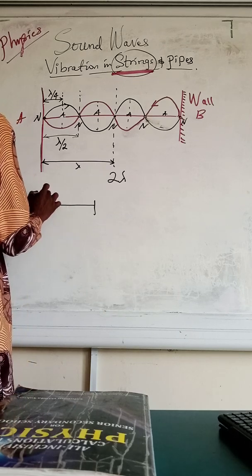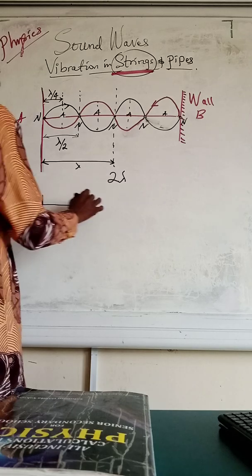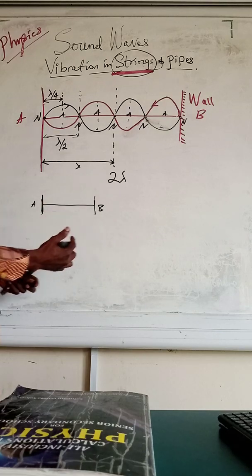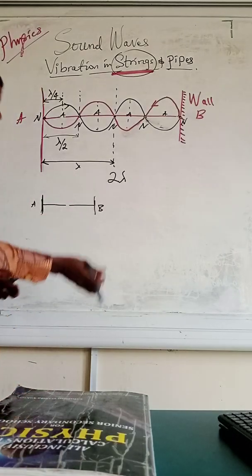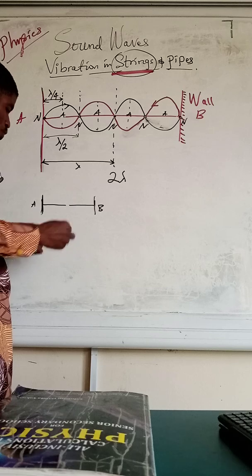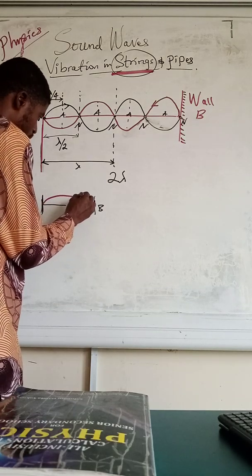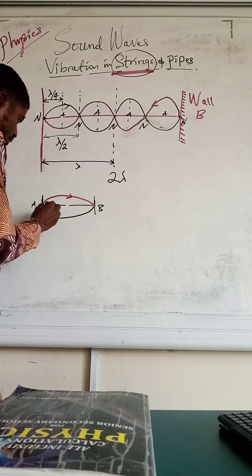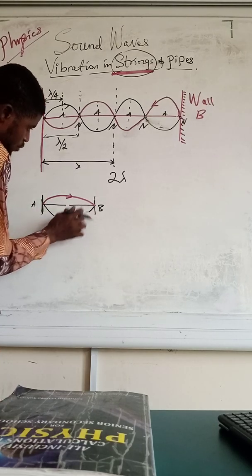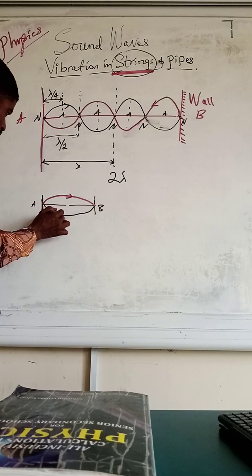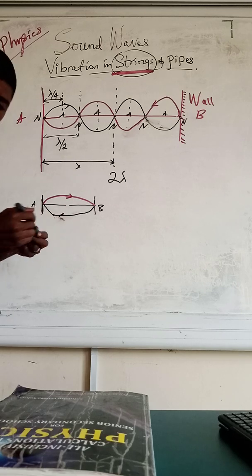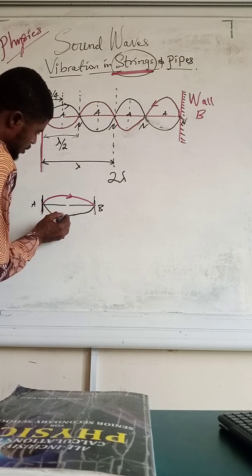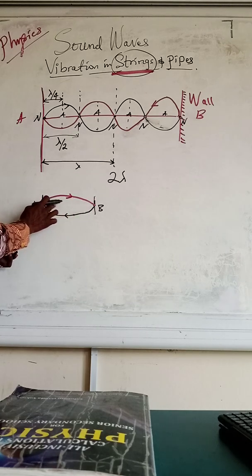Let's consider this as the string of a guitar. Let's call this A and B. The string of a guitar is a replica of a standing wave. If you pluck this string, a standing wave will be generated in this order.